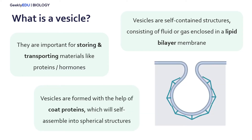Vesicles are formed with the help of what are called coat proteins. These are proteins on the outside of that lipid bilayer membrane, which help the vesicle self-form into this spherical, round structure.